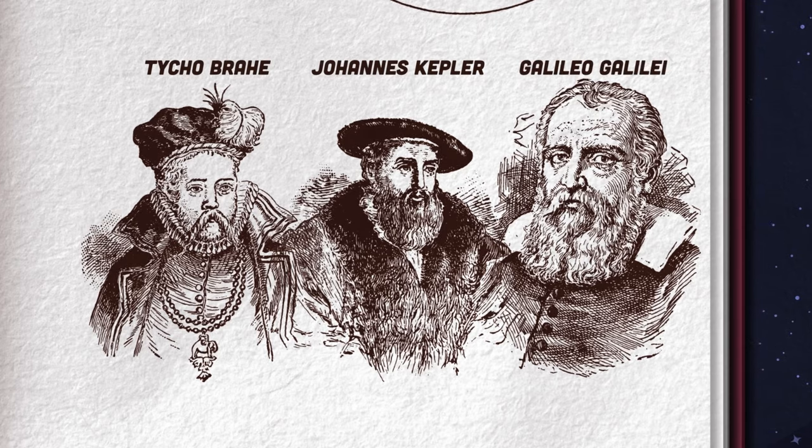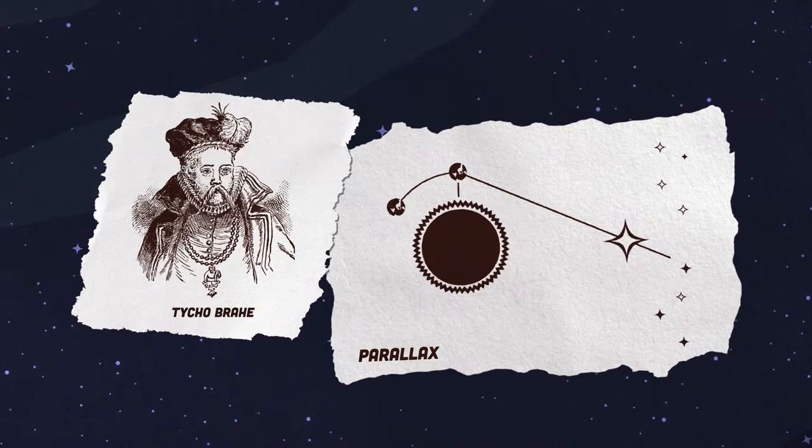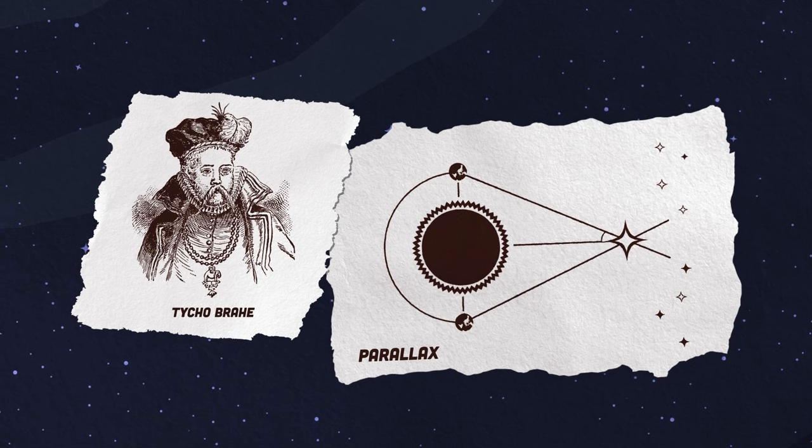Tycho used parallax measurements and shot for the stars. When he did this he recorded data when he focused on Mars.